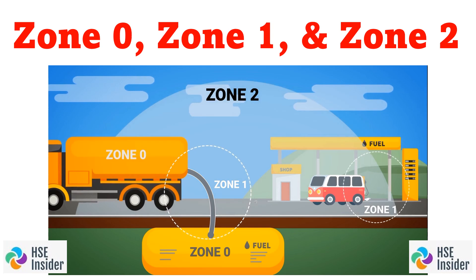As per HSE IEK standards, the most commonly used values for the zones are as follows: In Zone 0, the explosive atmosphere is present for more than 1,000 hours per year. In Zone 1, the explosive atmosphere is present for more than 10 hours but less than 1,000 hours per year. For Zone 2, the explosive atmosphere occurs for less than 10 hours, but is still sufficiently likely to require controls over ignition sources.